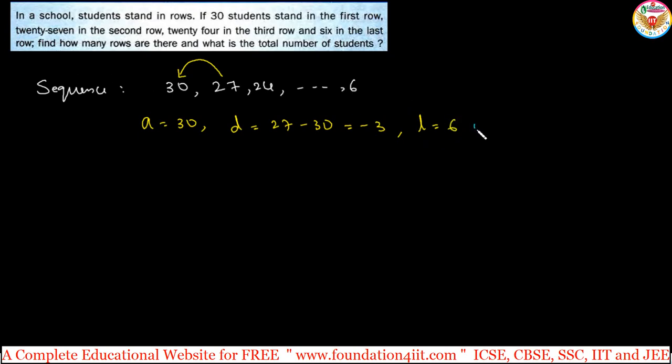As per the formula, tn equals a plus (n-1) times d. This is the general term formula. The last term is 6, so 6 equals a plus (n-1) times d. Here d is -3.